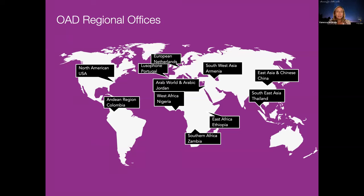Due to that idea of learning across geographical boundaries, we also have a number of regional offices. Our head office is in Cape Town, but we have 11 regional offices of astronomy for development situated throughout the world. Different parts of the world have different development priorities and different ways of implementing the mandate of astronomy for development for their particular regions.